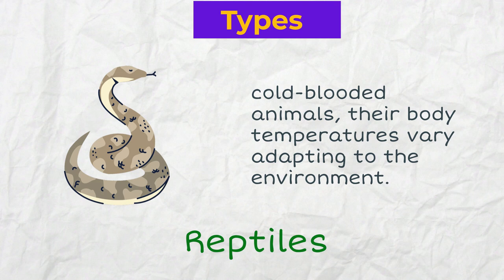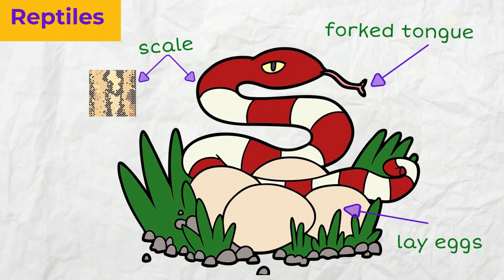Reptiles are cold-blooded animals, which means their body temperatures vary adapting to the environment. Also, they have scales, often a forked tongue, and they lay eggs.